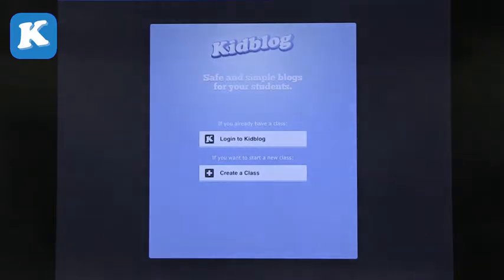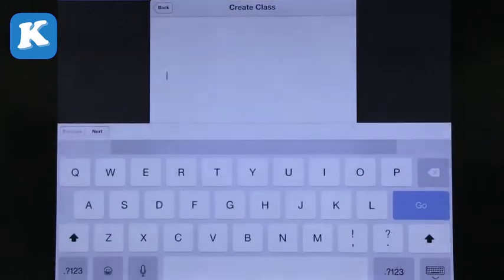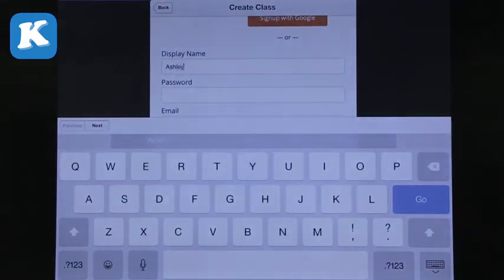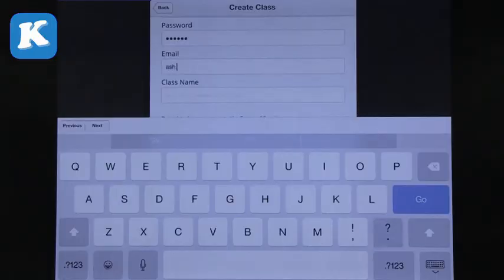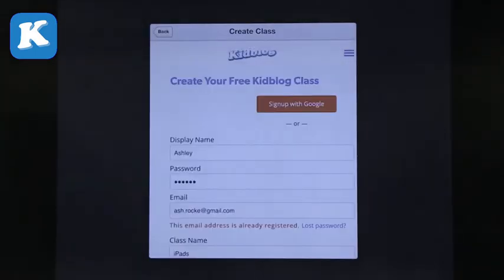The first thing that you're going to do is you're going to create a class. I'm going to go to create a class. I'm going to choose a display name and a password and an email. Class name: iPads. Already registered. So we saw how you create a class. It allows you to go in. Let's go into your account and see what you have.